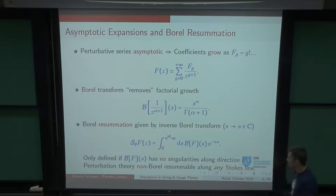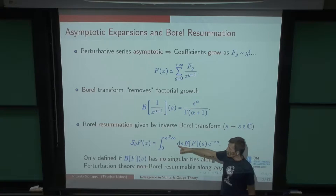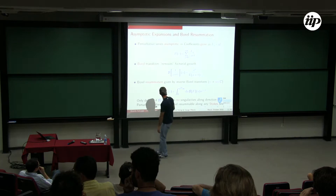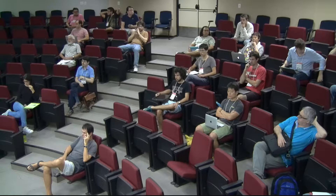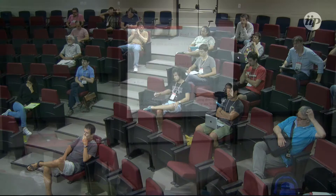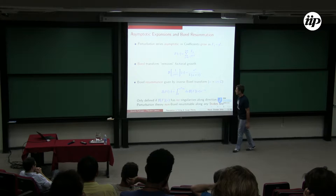The problem would end here, unless when I'm doing the Laplace integral I hit a singularity of the Borel transform. What it means is that there will be directions theta on the complex plane along which this will have singularities, and then I have to specify what's going to happen with the integration contour — whether it goes above or below that singularity.